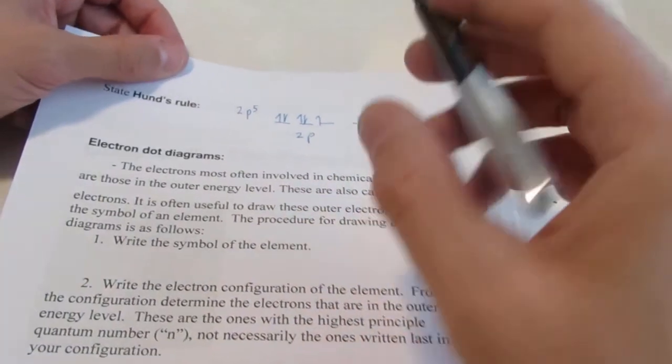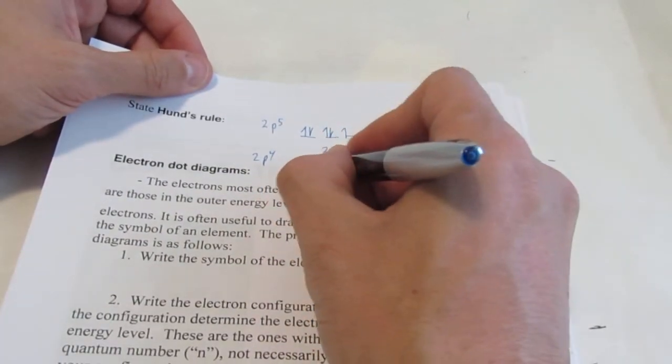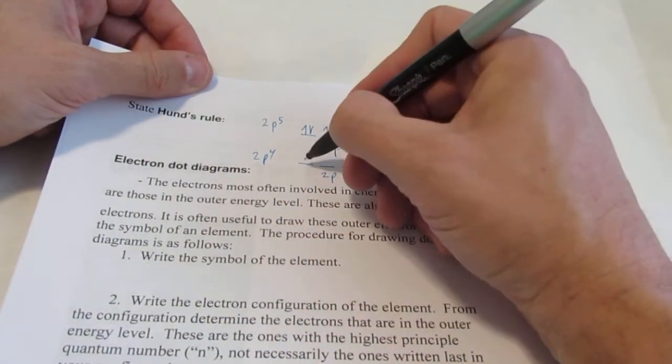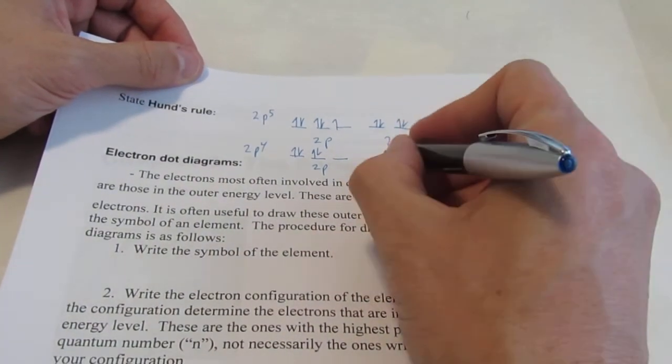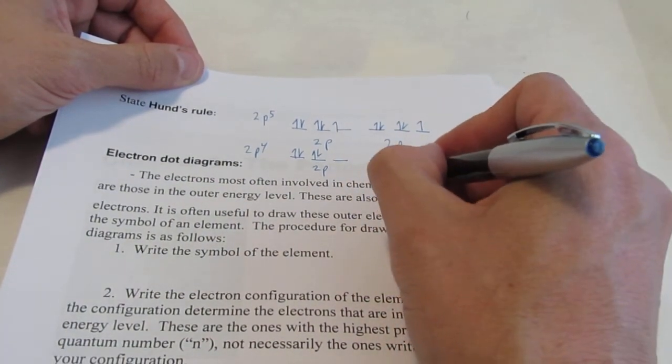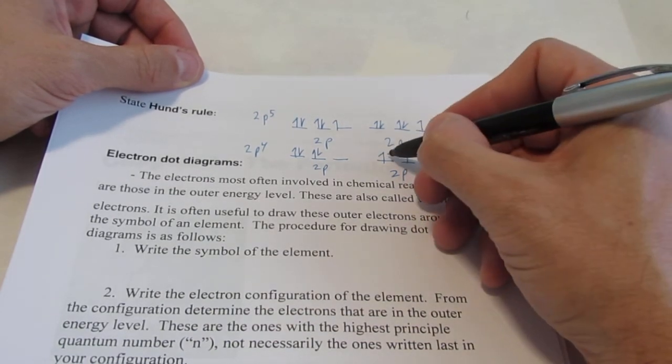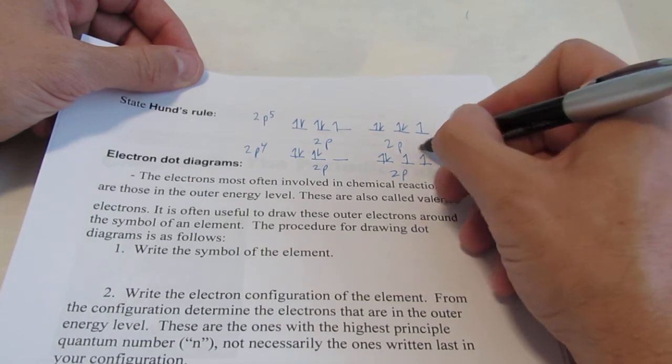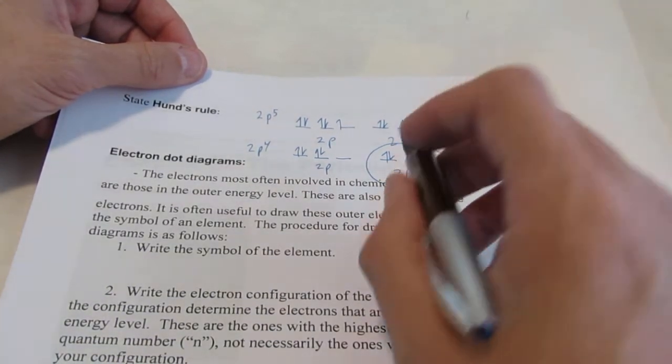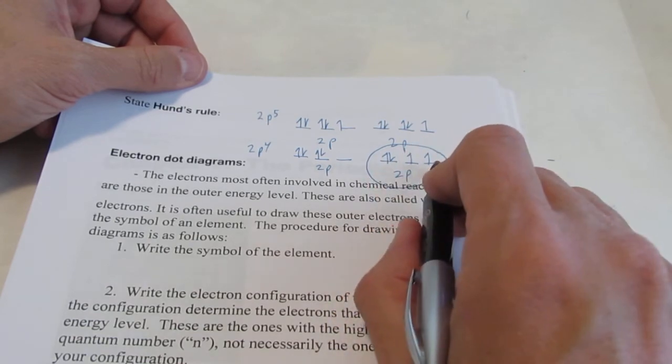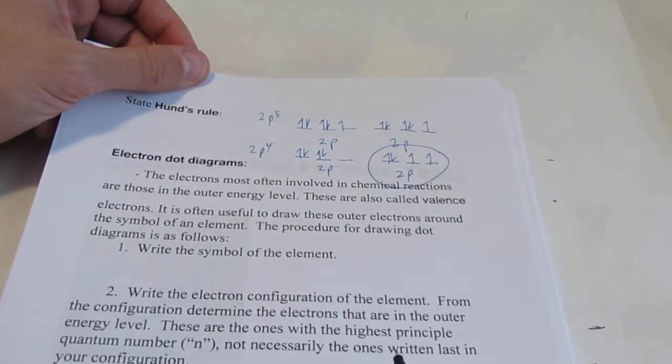But what if it was 2p4? Would it make a difference if it were 2p4? How do the electrons go in? Do they start pairing up right away? Would it look like that? Or do the electrons go in 1 at a time, and then when the sublevel is half full, then they begin to pair up? This is the correct way. So Hund's rule simply states that electrons go in 1 at a time until the sublevel is half full, and then they pair up.